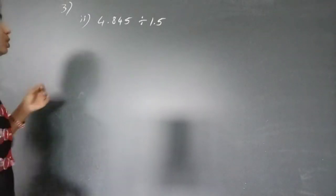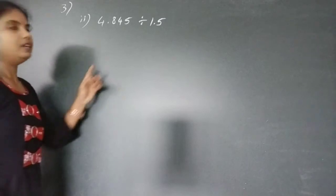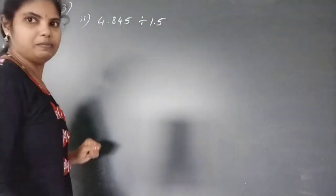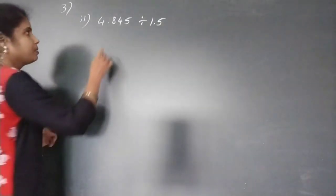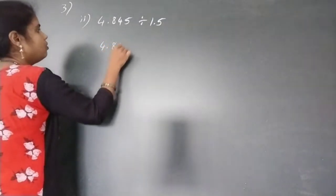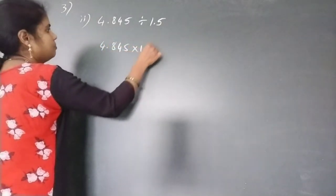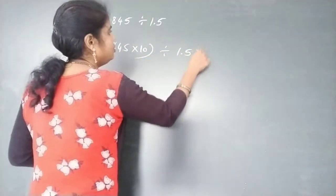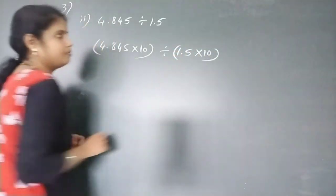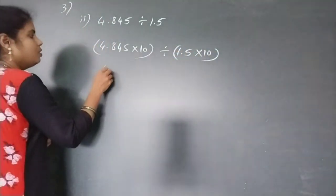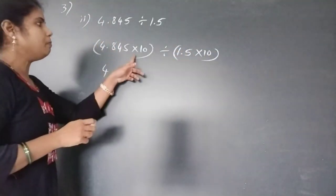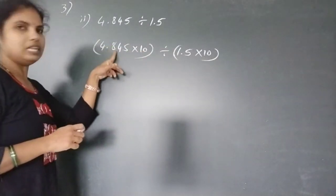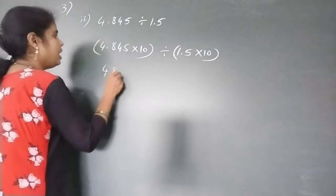Which number should you multiply here? The divisor 1.5 has a decimal point after 1 digit. So you should multiply both sides by 10. So 4.845 into 10. The decimal point moves 1 digit to the right, giving 48.45.